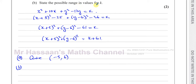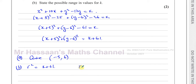Part b says state the possible range of values for k. We can see that k plus 61 represents r squared, the square of the radius. Now we know that the radius must be greater than zero — you can't have a radius that is zero or negative. If k plus 61 were negative, then r squared would be negative, and r would be undefined because you can't take the square root of a negative number. So k plus 61 must be greater than zero.